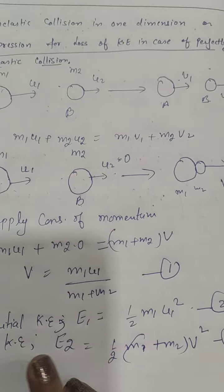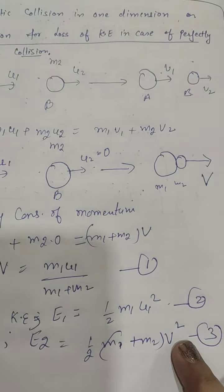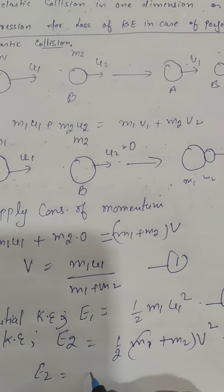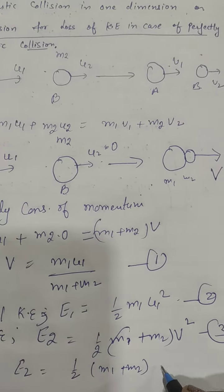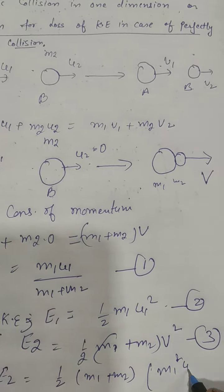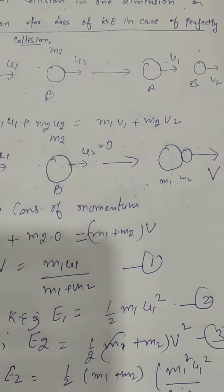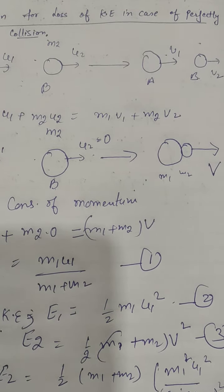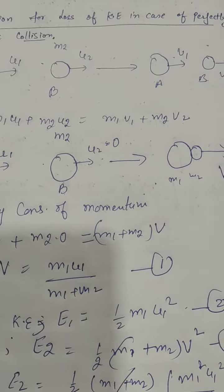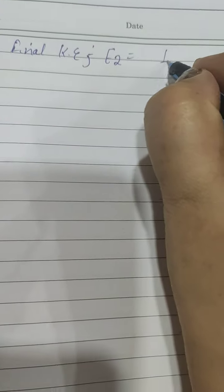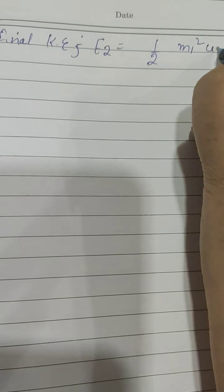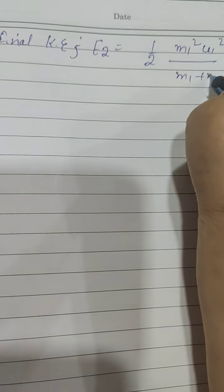Final kinetic energy E2 can be calculated by substituting v from equation 1 into equation 3. This gives E2 = (1/2)·(m1 + m2)·(m1·u1)²/(m1 + m2)². Simplifying, the (m1 + m2) terms cancel, giving final kinetic energy E2 = (1/2)·m1²·u1²/(m1 + m2).